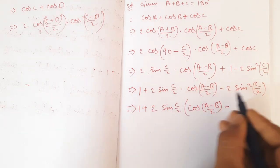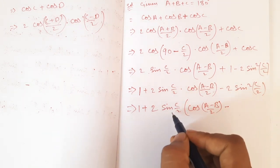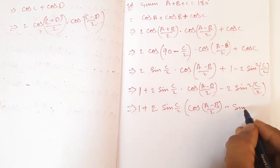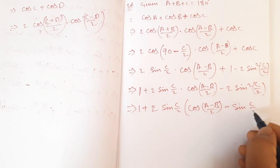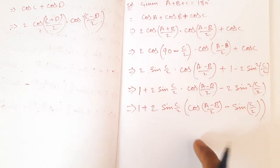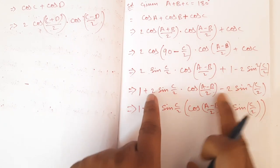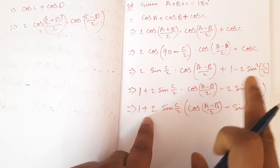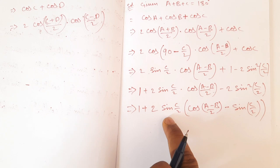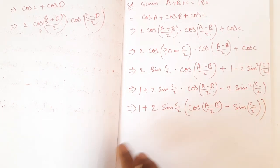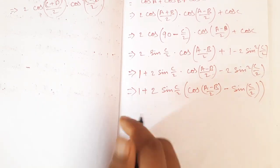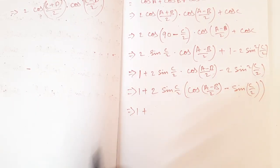First I will write cos((A−B)/2) minus 2·sin²(C/2). Factoring, we get 1 plus 2·sin(C/2)·[cos((A−B)/2) minus sin(C/2)], which is equal to 1 plus the sum. I will write down sin(C/2).